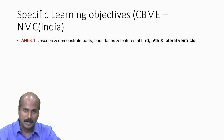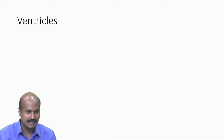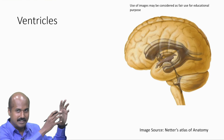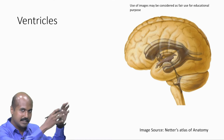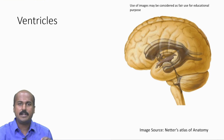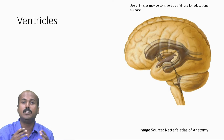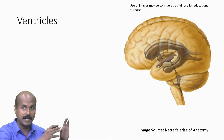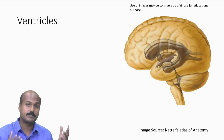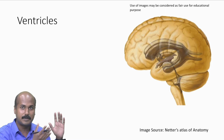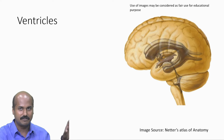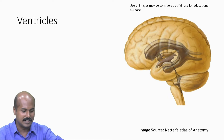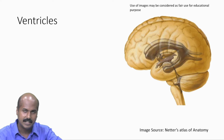We need to know what ventricles are, so first we will get an overview. As seen in this image, the dark colored structure within the brain is called the ventricles. Ventricles are basically spaces filled with CSF — cerebrospinal fluid. CSF is present outside the brain as well as inside the brain within these cavities called ventricles.